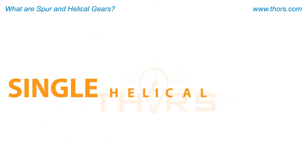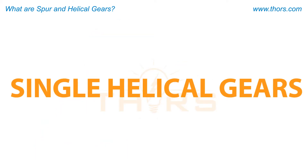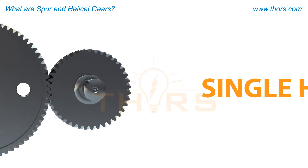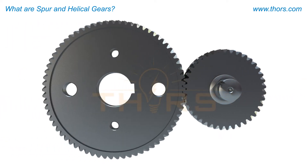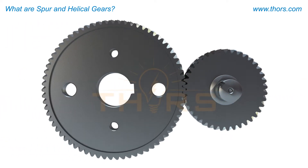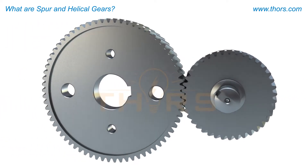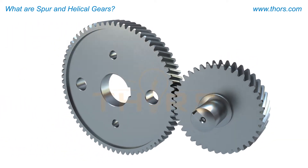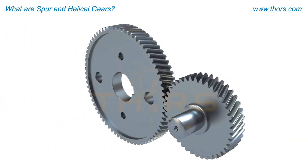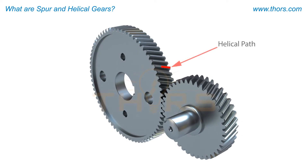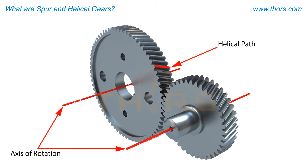Single helical gears are the second most common gear type. The teeth are cut on a helical or spiral path that is inclined with respect to the axis of rotation of the gear.